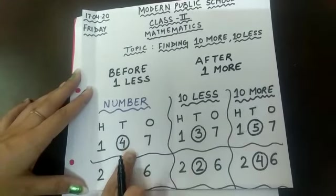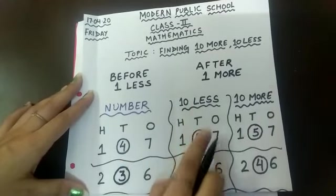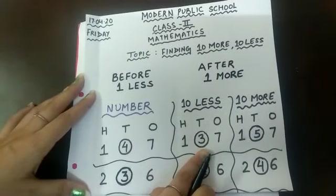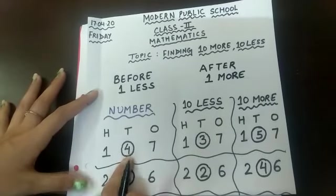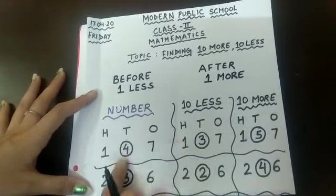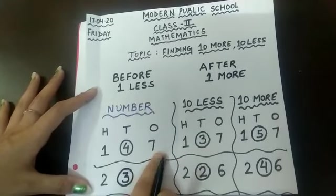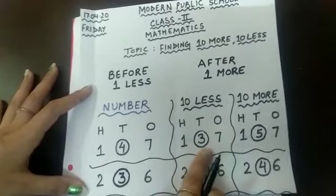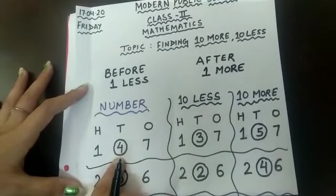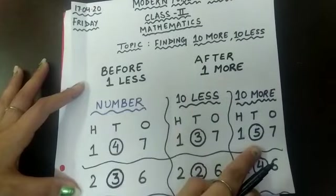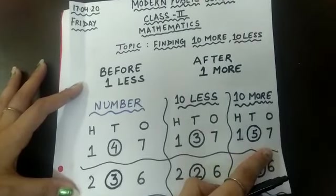147. 4 is at the tens place. So for finding 10 less, we will just see the tens place and find out what comes before 4. 3. So see, I have just changed 3 in this, so 147 became 137. And for finding 10 more, I will just see what comes after 4. 5. So it became 157.